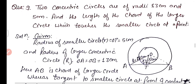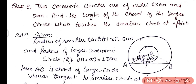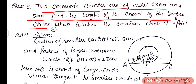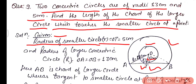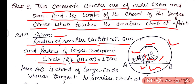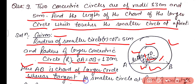Question number nine: two concentric circles of radii 13 centimeters and 5 centimeters. Find the length of the chord of the larger circle which touches the smaller circle at a point. We have chord AB of the larger circle tangent to the smaller circle at point T. The radius of the smaller circle r = OT = 5 cm, and the radius of the larger circle R = OA = OB = 13 cm.